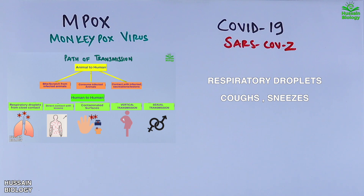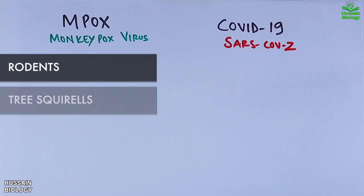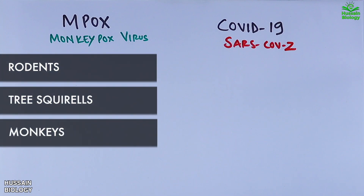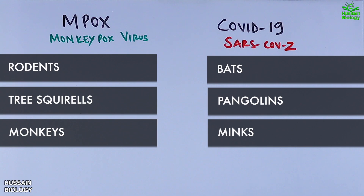For monkeypox virus, natural reservoirs include rodents, tree squirrels, small mammals, and monkeys — though monkeys are less susceptible than tree squirrels and rodents. On the other hand, SARS-CoV-2 can be found naturally in bats, pangolins, minks, and similar animals.